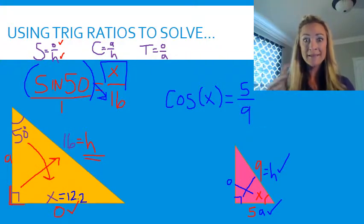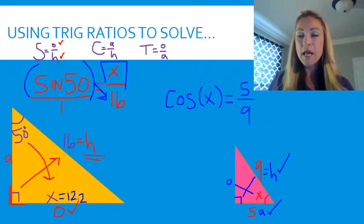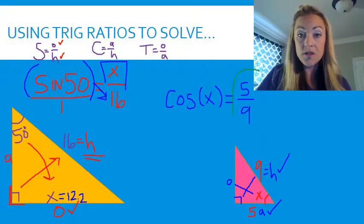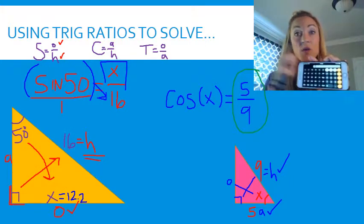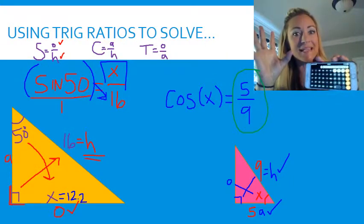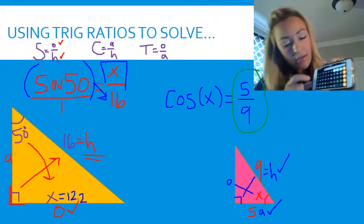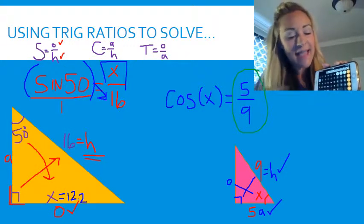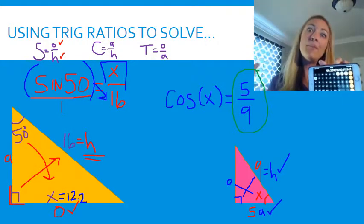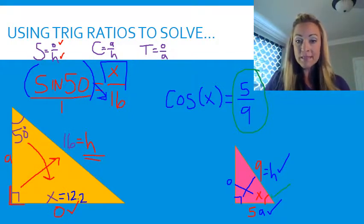When solving for the angle, you use the inverse function. First, calculate 5 divided by 9 on your calculator to get a decimal. Then push the second button — your trig functions become inverse functions — and hit cosine inverse. It magically gives you the angle. The degree of angle x is 56.3 degrees.